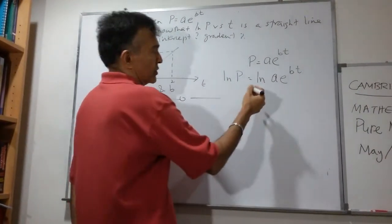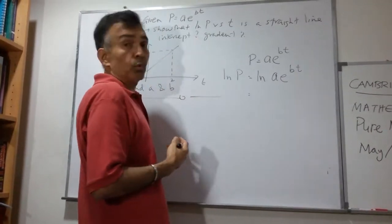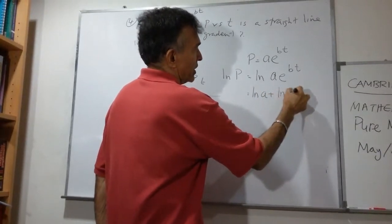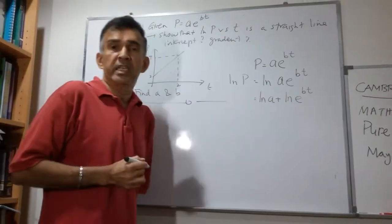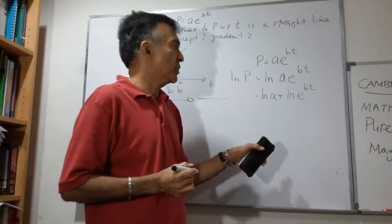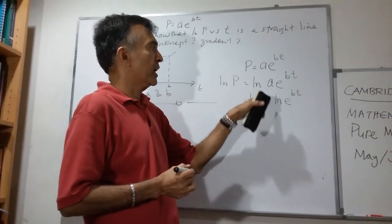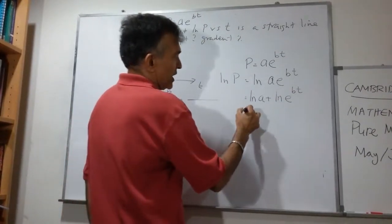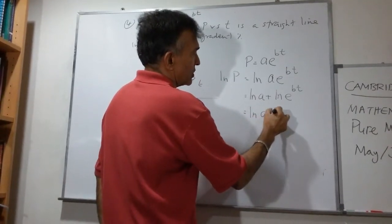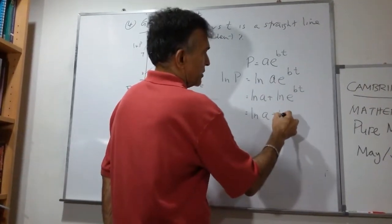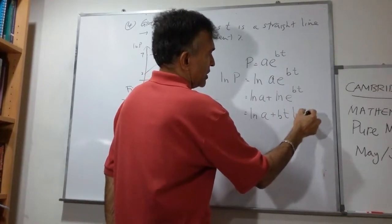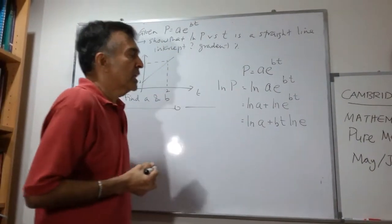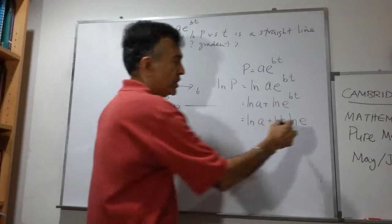On the right hand side, let's use the rules of logarithms. I can write this as ln A plus ln E to the power of BT. Using the rules of logs, we can break this up: log A plus log E to the power of BT. Using another rule of logs, we can write this as BT log E. So I'm just bringing the power down. Log E, we all know, is 1.